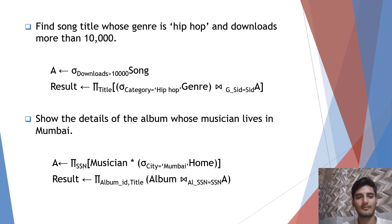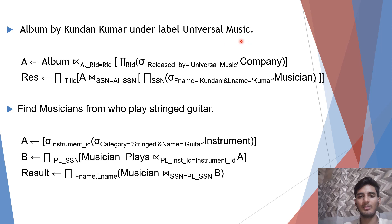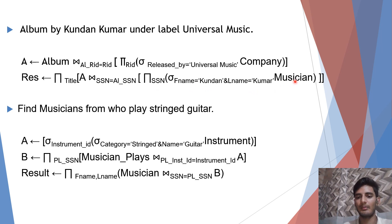The next query is: albums by KundanKumar under the label Universal Music. First, we take all releasing IDs released by Universal Music, then join it with album wherever album releasing id is equal to releasing id, stored in A. Then we take all SSNs of musicians whose first name is Kundan and last name is Kumar, and join it with A wherever ssn is equal to alssn. From there we project title, stored in result.